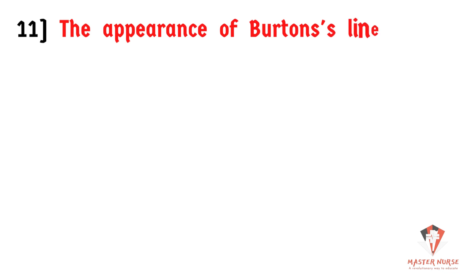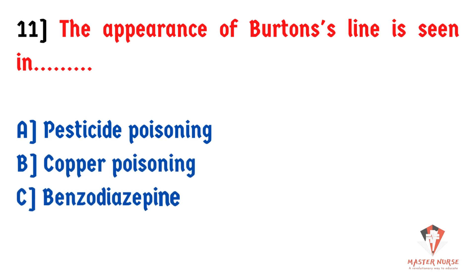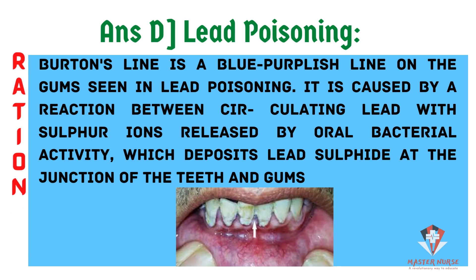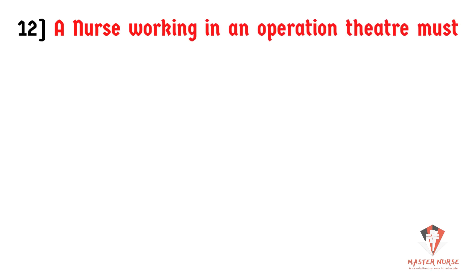The appearance of Burton's lines is seen in: A) Pesticide poisoning, B) Copper poisoning, C) Benzodiazepine poisoning, D) Lead poisoning. The answer is D, lead poisoning. In lead poisoning, ingested lead circulates in the blood and combines with sulfur ions in the teeth and gums — released by oral bacterial activity. Lead and sulfur react to form sulfites, which deposit in the teeth and gums, causing blue-purple lines known as Burton's lines.